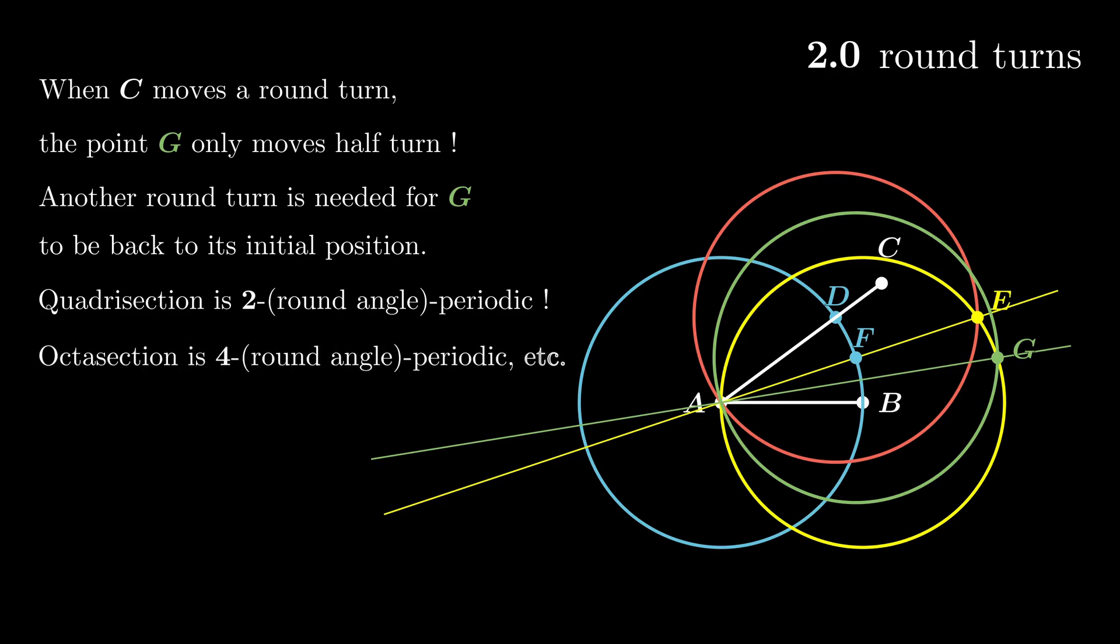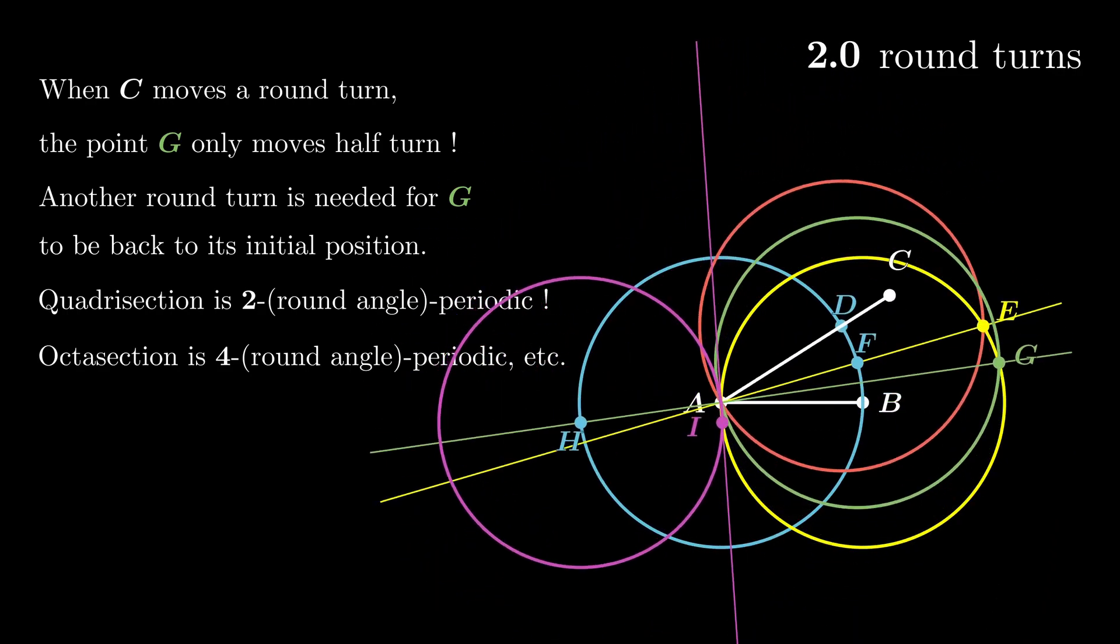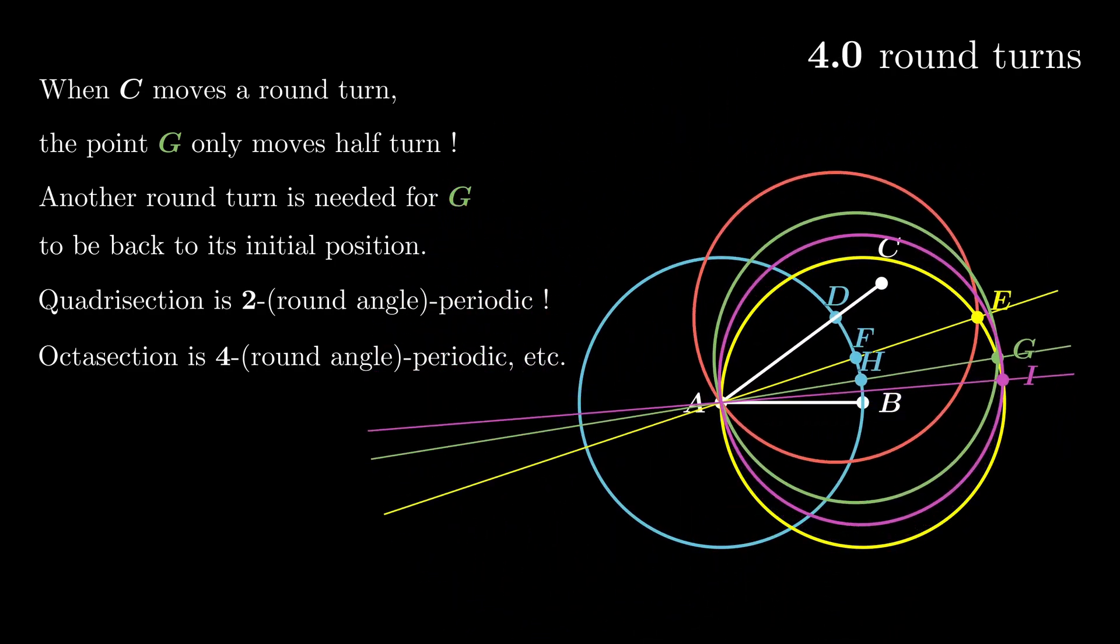As you can see, we can go further. If we perform octasection, it is four periodic, as shown in this animation.